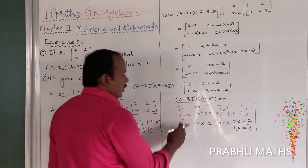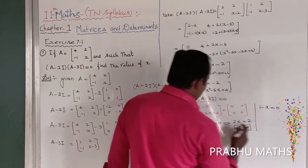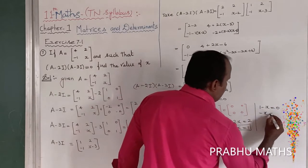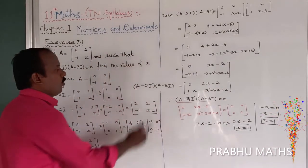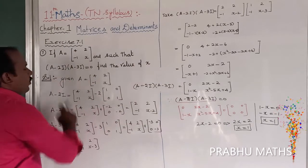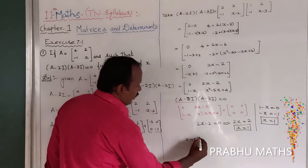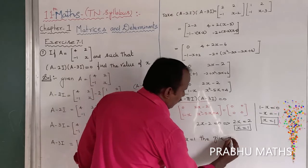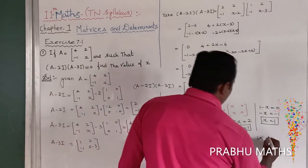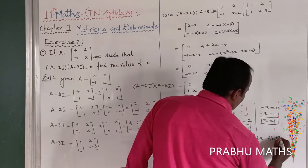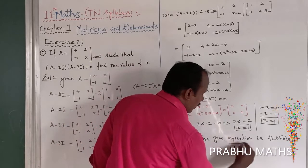That is the first answer. For the second entry: 1 minus x equals 0, which gives minus x equals minus 1, so x equals 1. Therefore x equals 1. Now, replacing x equals 1 into this equation, the equation is fully satisfied. Therefore, the given equation is possible at x equal to 1. The possible value of x is 1.